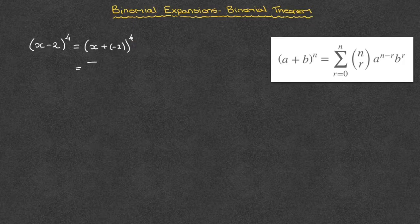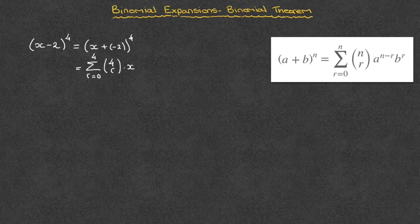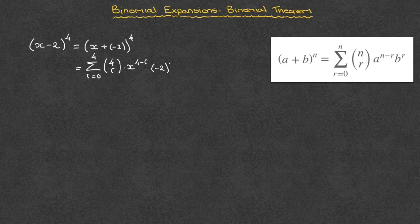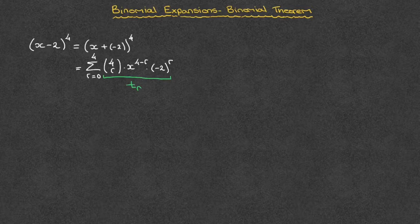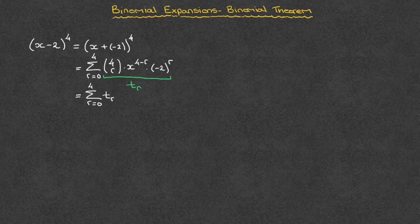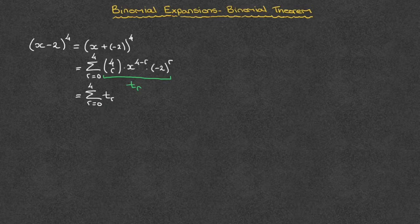So we write that this equals the sum from r equals 0 up to 4 of the binomial coefficient 4-choose-r, times x raised to the power of 4 minus r, times negative 2 in parentheses raised to the power of r. The expression to the right of the summation symbol is the general term of our binomial expansion, which I call t of r. This allows us to state that the sum equals the sum from r equals 0 up to 4 of t of r.